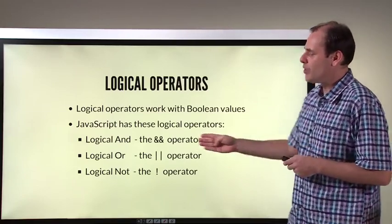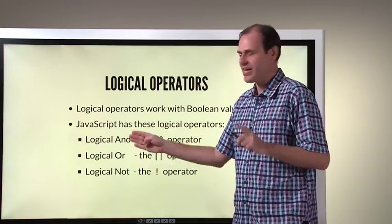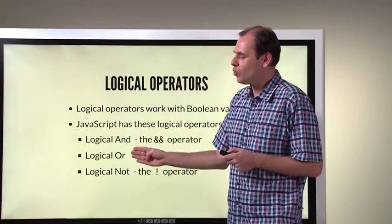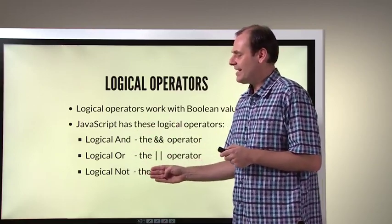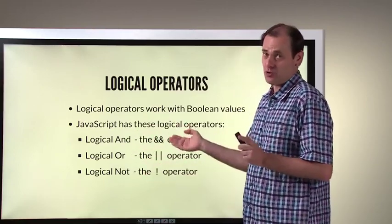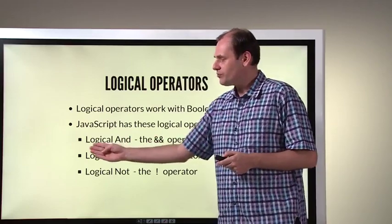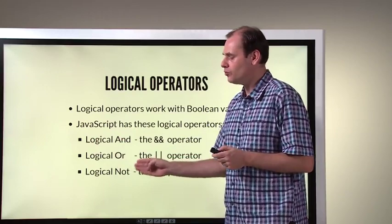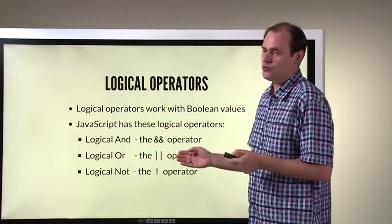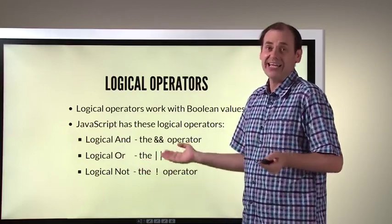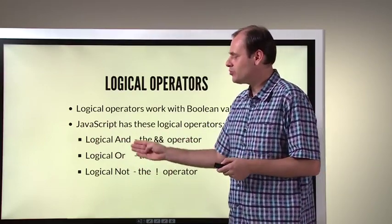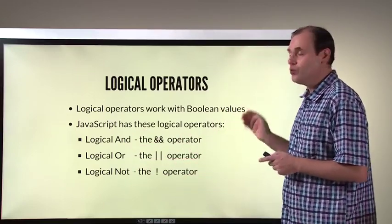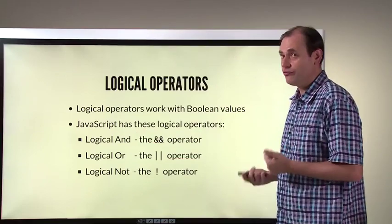There are three ways to test, check, and manipulate them, and they are called AND, OR, and NOT. Just to be extra clear that this is about true or false, people often say logical AND, logical OR, logical NOT, as opposed to general English. These things work with Boolean values which have true or false.